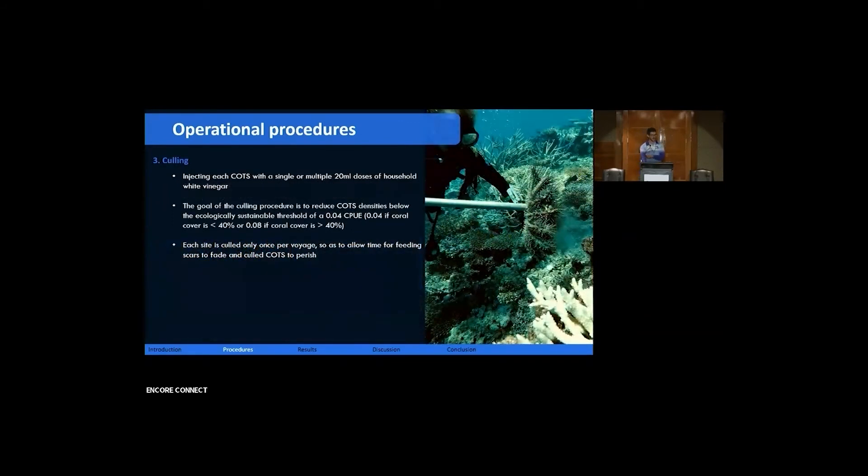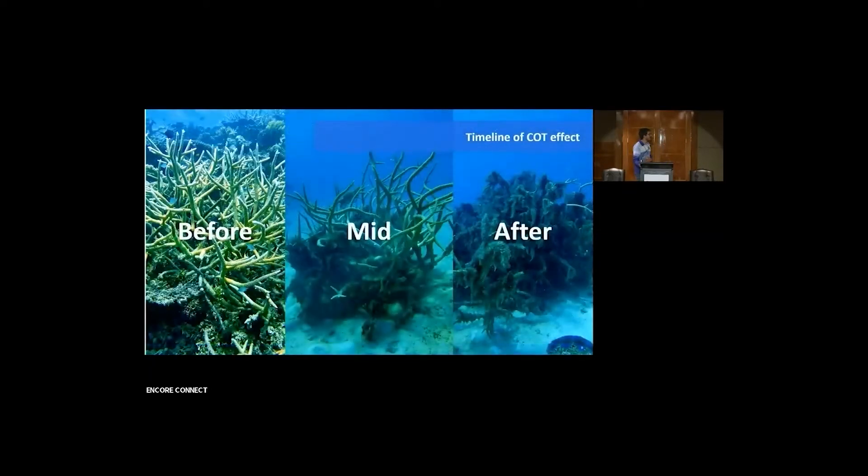And then the thing that we're all here as an operator to talk about, which is the culling aspect. So often when we come across a coral out on the reef, we'll find a white scar from where the coral has caught has been predating. And as you can see over time, algae and the COTS continues to munch away at the coral. Eventually, it comes to that point where the coral is now overtaken by macroalgae and it completely dies. So we try to get to it before it gets to that stage.